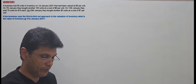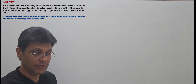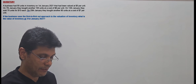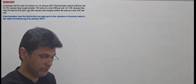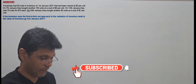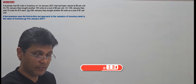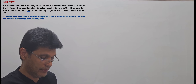A business had 50 units in inventory on 1st January 2021, valued at $5 per unit. On 7th January, they bought another 100 units at a cost of $6 per unit. On 14th January, they sold 70 units for $10 each. On 25th January, they bought another 8 units at a cost of $7 per unit. The business uses the first-in-first-out approach to inventory valuation. What is the value of inventory at 31st January 2021?